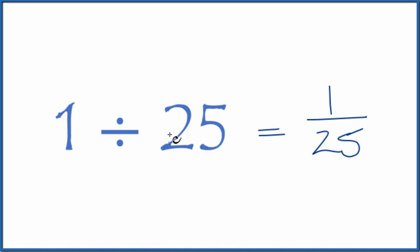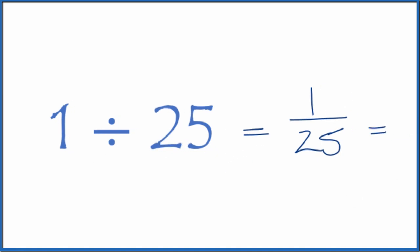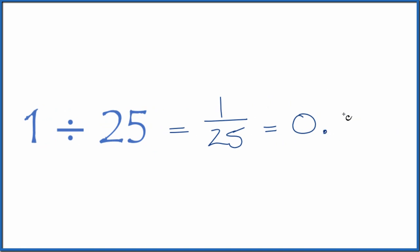You could also divide 1 by 25 on a calculator. 1 divided by 25 equals 0.04. So 1 divided by 25, we get a fraction 1/25th, or a decimal 0.04.